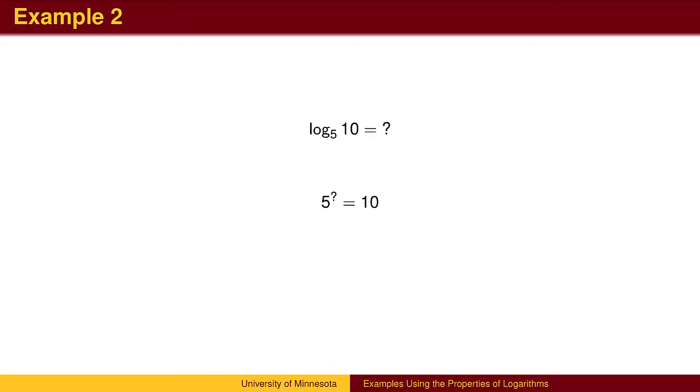What is the exponent you put on 5 to get 10? This is harder. It should be clear that the answer is bigger than 1, since 5 to the first is 5, and that the answer is smaller than 2, since 5 squared is 25.